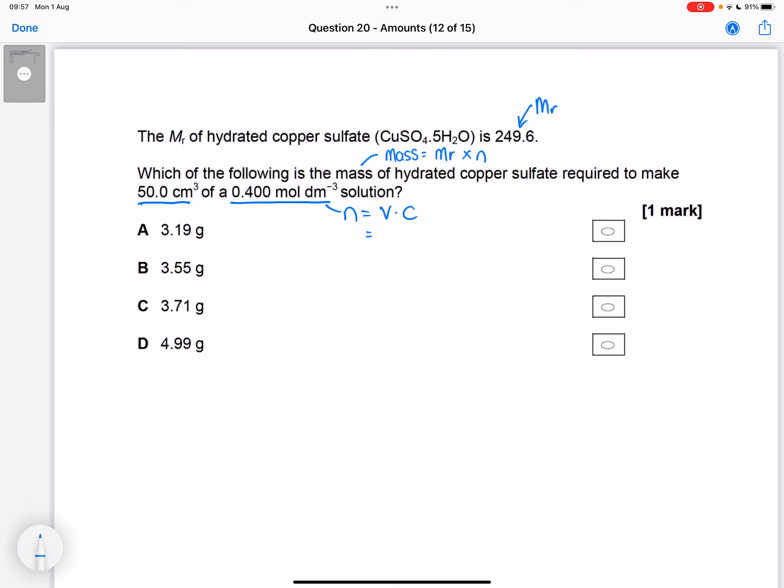Now the volume is in centimeters cubed here and concentration is in moles per decimeter cubed. So we need to make them in the same units. So I'm going to turn my centimeters cubed into decimeters cubed by dividing it by a thousand so that I can combine it with that concentration.